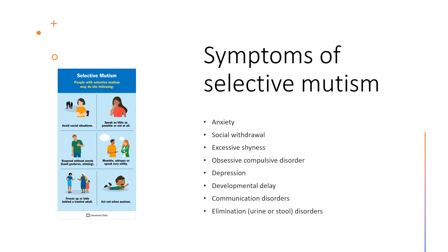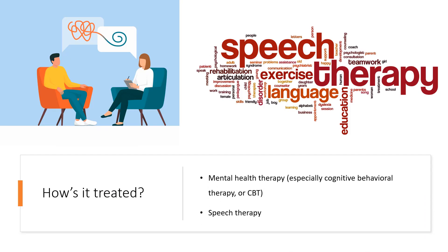Some children with selective mutism may show additional signs such as anxiety, social withdrawal, excessive shyness, obsessive compulsive disorder, depression, developmental delay, communication disorders, and elimination disorders.